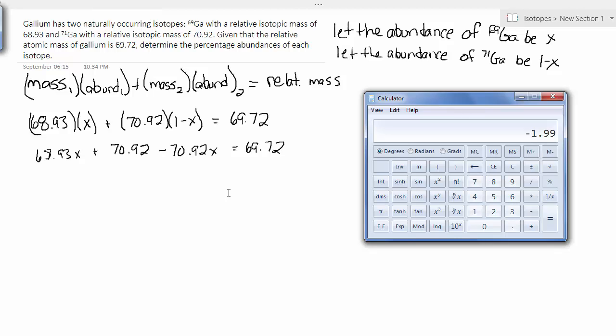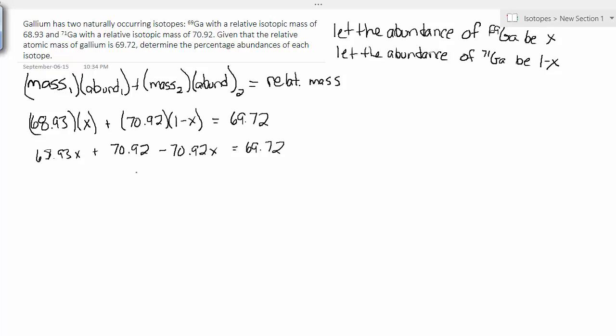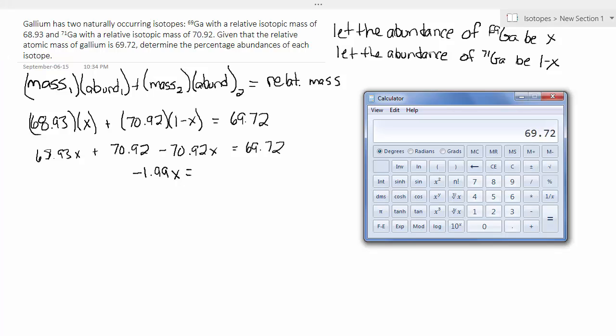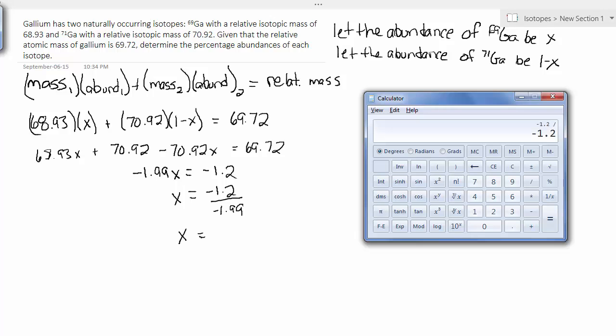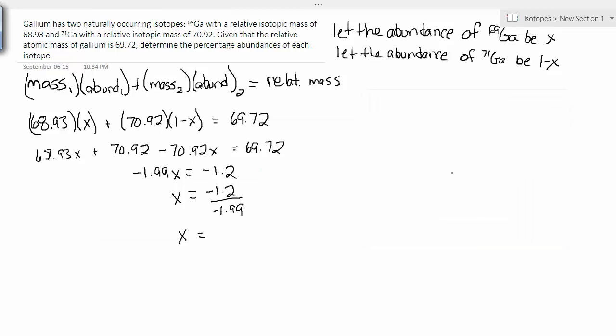And this leaves me with negative 1.99x and also with negative 1.2. I'm just going to do negative 1.2 divided by negative 1.99.